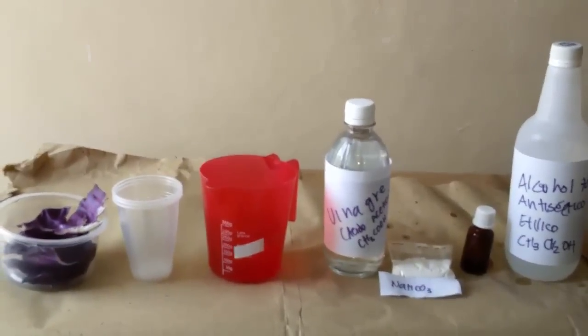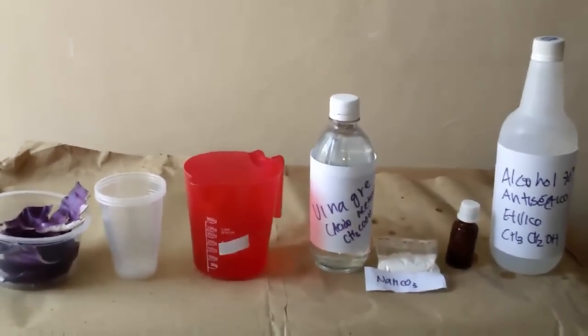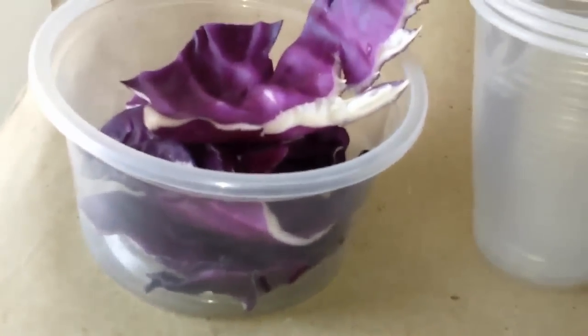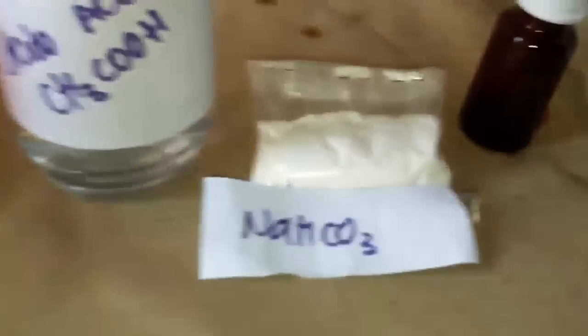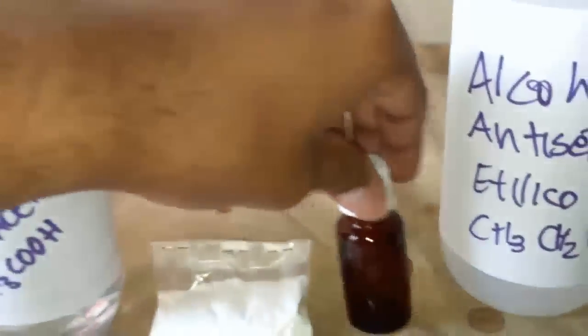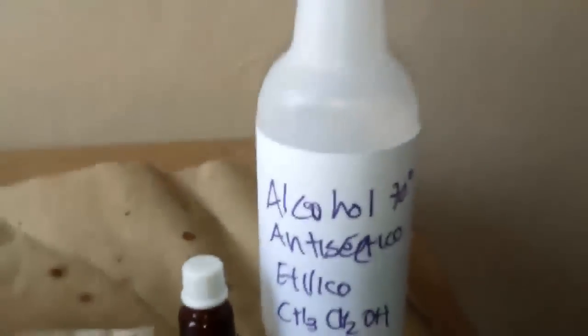Estos son algunos de los materiales que vamos a utilizar para hacer el indicador de repollo morado. Tenemos hojas de repollo, tres vasos de plástico, aproximadamente 200 mililitros de agua, vinagre blanco, bicarbonato de soda, un recipiente que va a ser las veces de gotario y alcohol antiséptico al 70%.